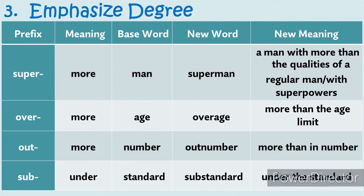The third group is prefixes that emphasize degree — like how much, more, or less. The prefixes super-, over-, and out- mean more, while sub- means under. Example of super-: added to the word man, it becomes superman, meaning a man with more than the qualities of a regular man, with superpowers. Over-: added to the base word age, it becomes overage, meaning more than the age limit. Out-: added to the base word number, it becomes outnumber, meaning more than in number. Sub-: when added to the base word standard, it becomes substandard, meaning under the standard.